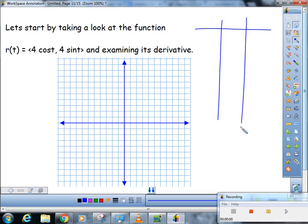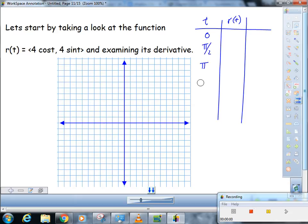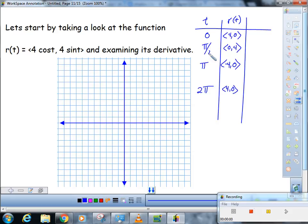If we made a t chart, let's just do that: 0, pi over 2, pi, and 2 pi. So 4 times the cosine of 0 is 4 because cosine of 0 is 1. 4 times the sine of 0 is 0, so that's the vector you're going to get. And then you would get 0 comma 4, and then you would get negative 4 comma 0, and we'd be back to where we started here. Keep in mind that these are not equally spaced.